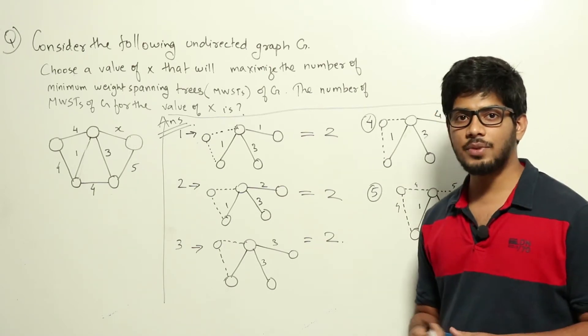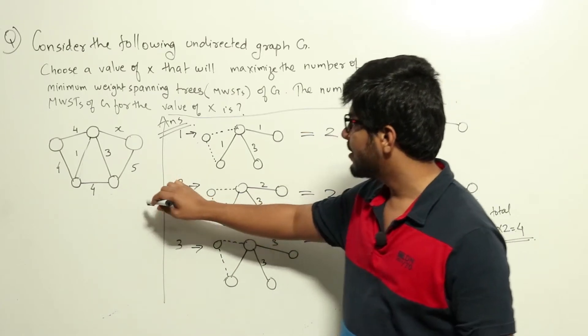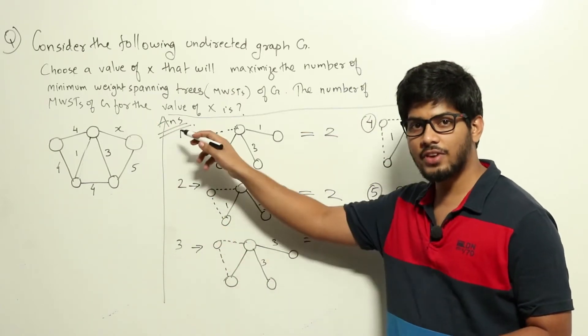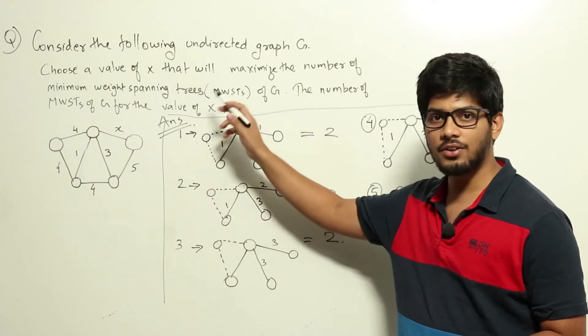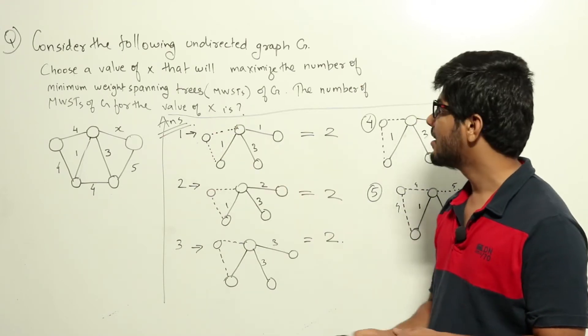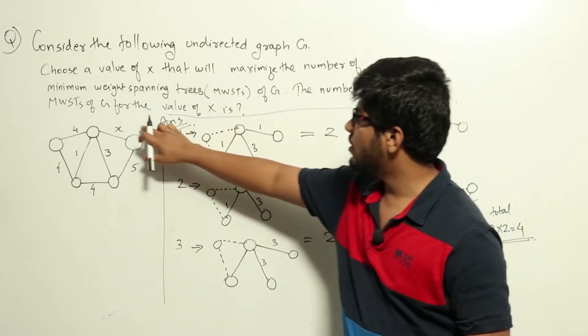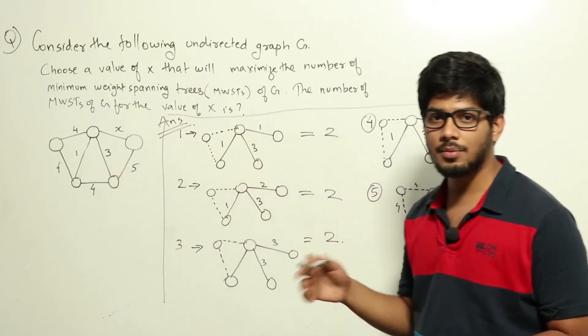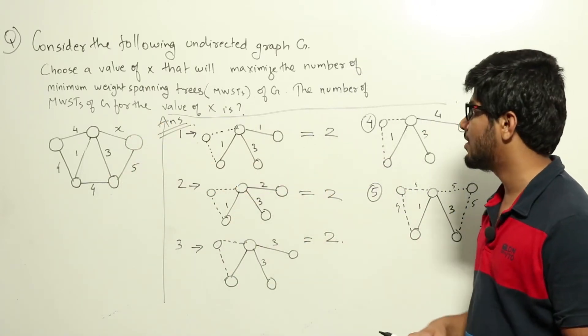So in this question we have been given this particular graph in which the value of X is unknown. We need to give X some particular value and find out the number of minimum weight spanning trees. And the question we are asking is for what value of X this number of minimum weight spanning trees will be maximum and what that maximum value will be.